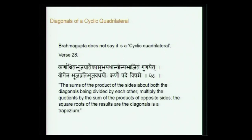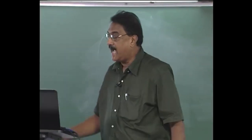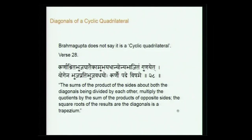Earlier we discussed the circumradius of a triangle and a cyclic quadrilateral. We will now discuss the diagonals. Brahmagupta does not specifically mention that it is a cyclic quadrilateral, but the formula is applicable only to that. He says: 'Karnaasrita bujagataykaam ubayathanyonyabhajitam gunayet, yogena bujapratibuja varayoho karnau padevishame.'